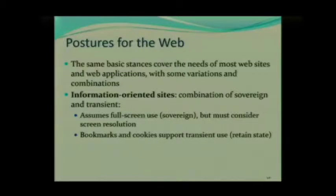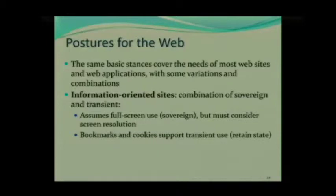There are two types of websites you can break things down into. One of them is information-oriented sites. Examples would include Google, and Wikipedia is an excellent example. If you look at Wikipedia and consider postures for the web, what you actually find is that we tend to use them a great deal as sovereign postures, but they are also transient.